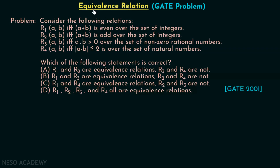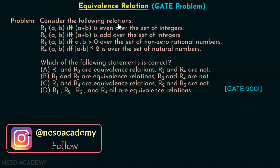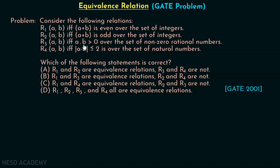Let's discuss one GATE problem related to equivalence relations. Consider the following relations: R1 if and only if a plus b is even, over the set of integers. R2 if and only if a plus b is odd, over the set of integers. R3 if and only if a multiplied by b is greater than 0, over the set of non-zero rational numbers. R4 if and only if the absolute value of a minus b is less than or equal to 2, over the set of natural numbers. Which of the following statements is correct? This question has been asked in GATE 2001. Pause the video and try to answer on your own.